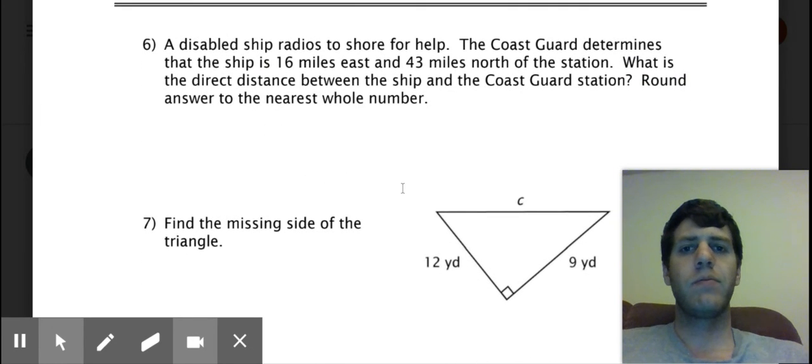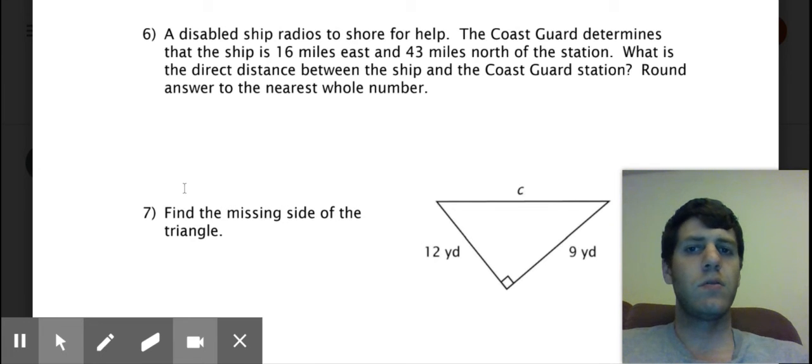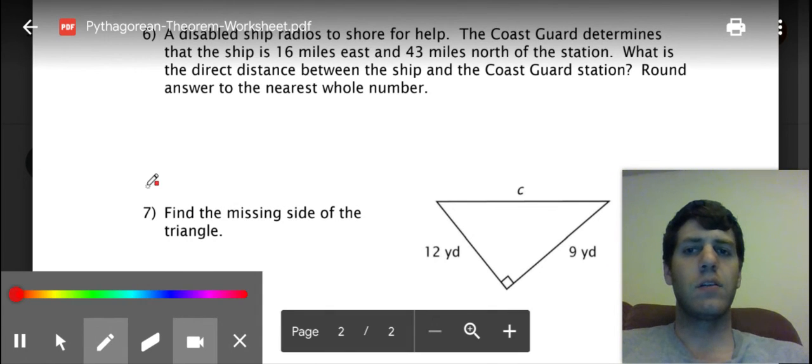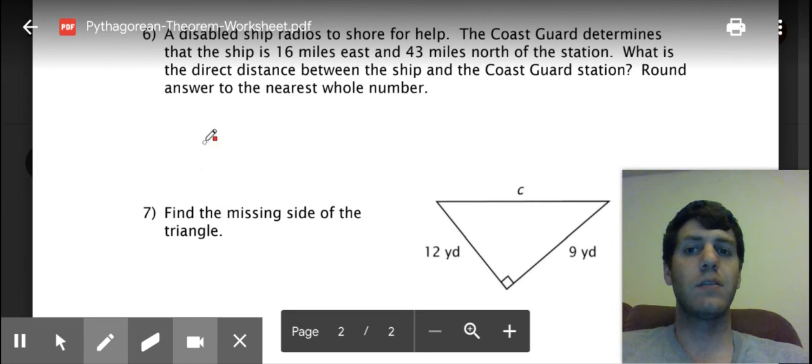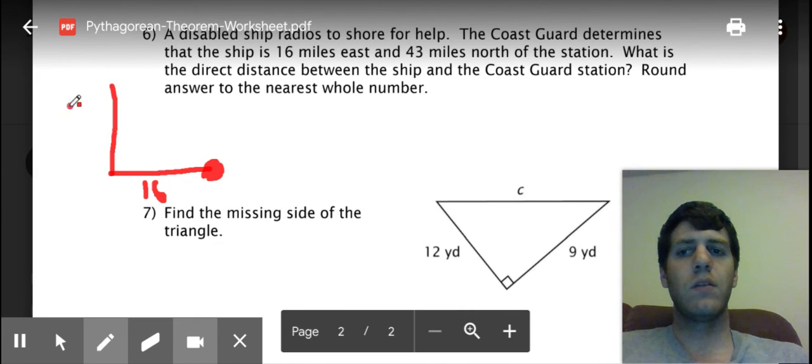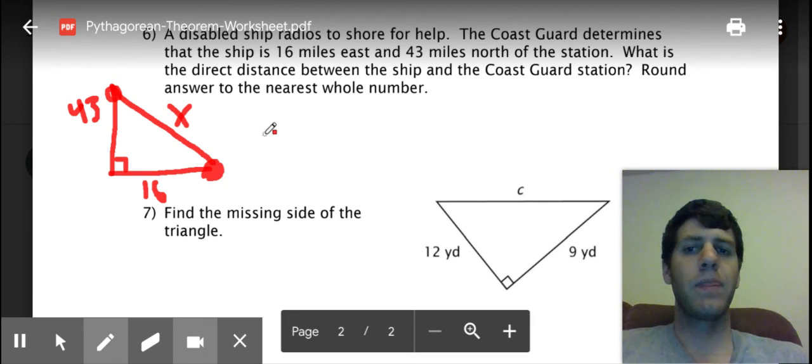Okay six, again you got to draw it out. So a ship radios ashore for help. The coast guard determines that the distance the ship is 16 miles east, so 16 miles east of the station, so here's the station. Right, you're 16 miles east and then you're 43 miles north. Okay and then you have a right triangle and you want to find what is the direct distance between the ship and the coast guard. So here's the ship, it's 16 miles east of the station and 43 miles north, and then we want another direct distance, that would be x, your hypotenuse. You can then use the Pythagorean theorem to find that.